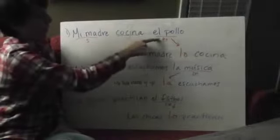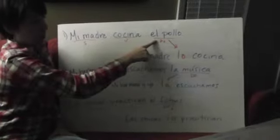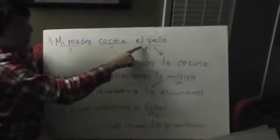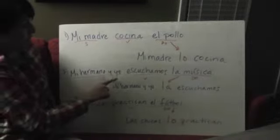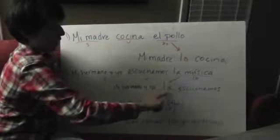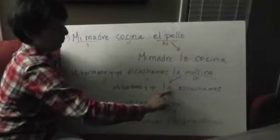A few more examples. Mi madre cocina el pollo. Mi madre is the subject, cocina is el verbo, and el pollo is the direct object. El pollo is masculine singular, so it gets replaced with lo, and we end up with mi madre lo cocina. Then: mi hermano y yo escuchamos la música. What do we listen to? La música — feminine singular — so la música will be la. We put it before the verb: mi hermano y yo la escuchamos. We listen to it.